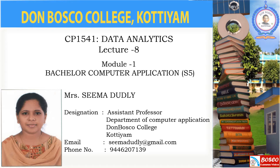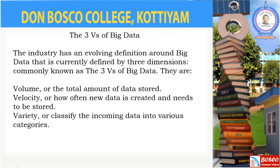The three dimensions of big data are volume, velocity, and variety. Volume means the total amount of data stored. Velocity means how often new data is created and how it is stored. Variety means to classify the incoming data from various sources into various categories.